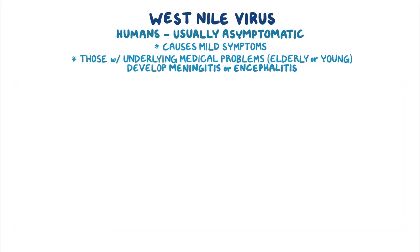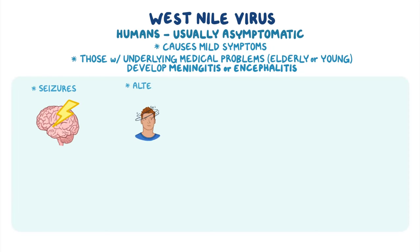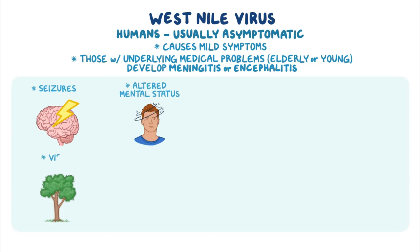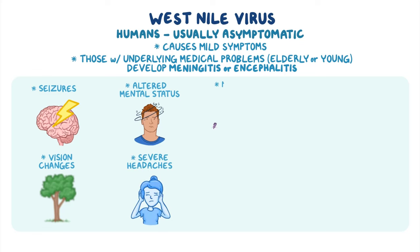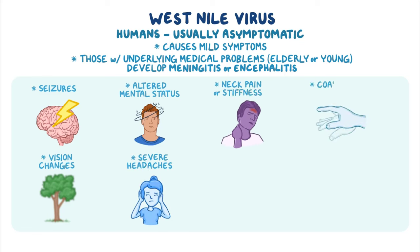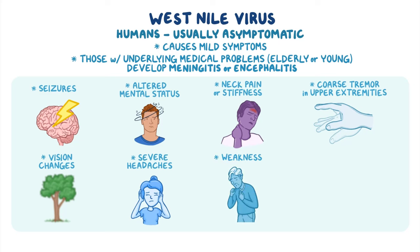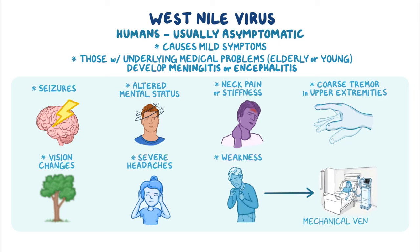These conditions can present with seizures, altered mental status, vision changes, severe headaches, neck pain or stiffness, and coarse tremor in the upper extremities. In a few cases, weakness becomes severe enough to require mechanical ventilation.